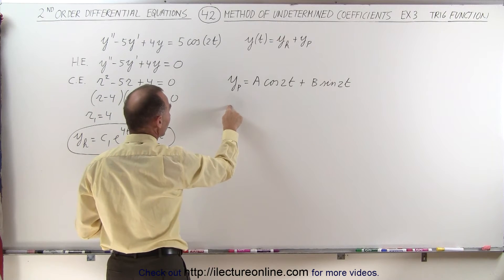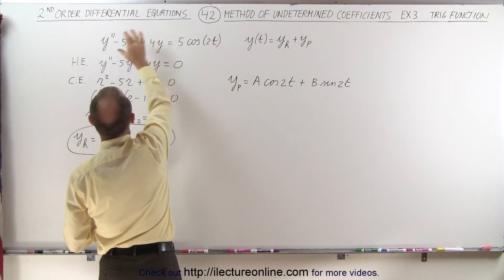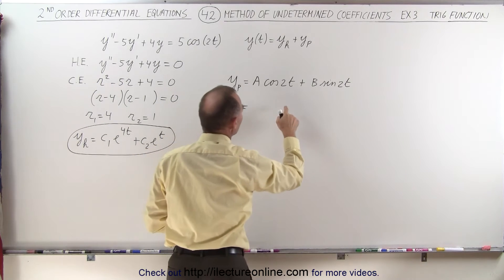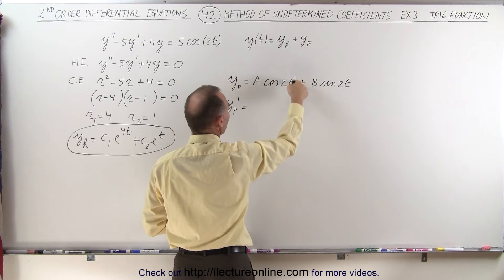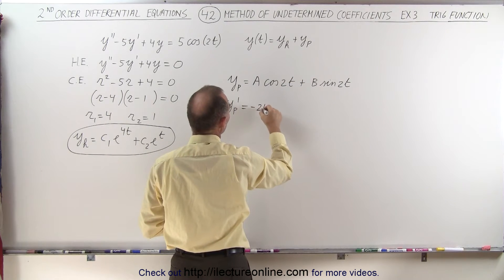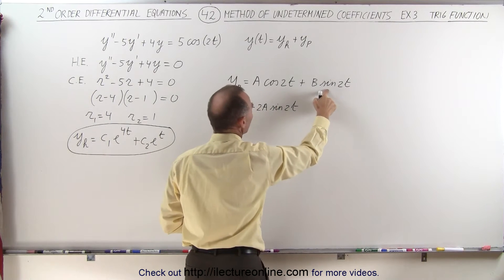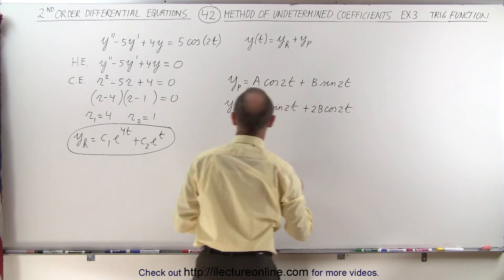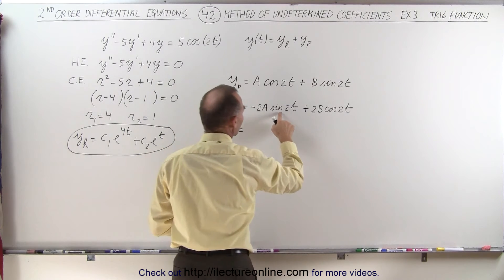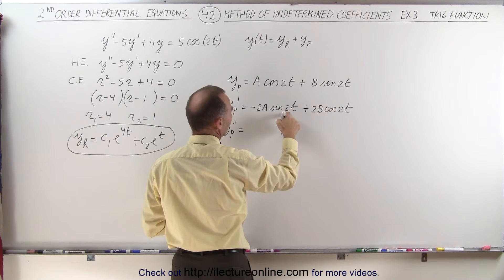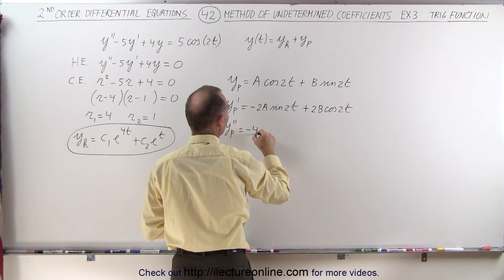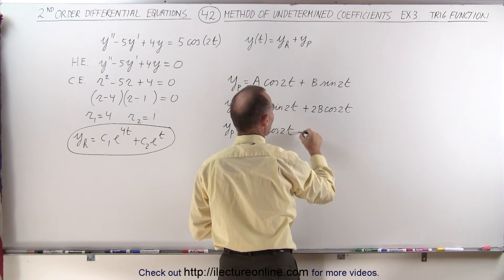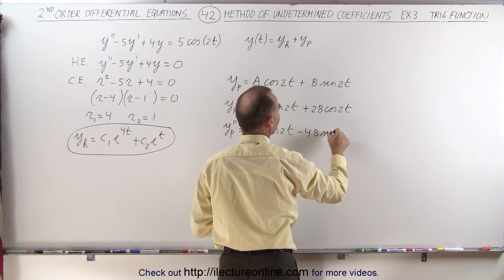To do that, we take the first and second derivatives of the particular solution and plug them into the original equation. The first derivative y_p prime equals minus 2A times sine of 2t plus 2B times cosine of 2t. Taking the derivative again, the second derivative y_p double prime equals minus 4A times cosine of 2t minus 4B times sine of 2t.